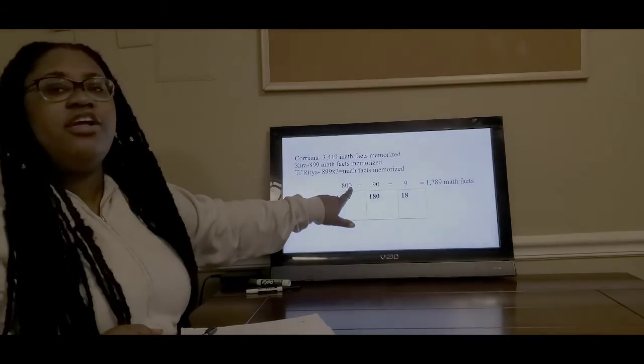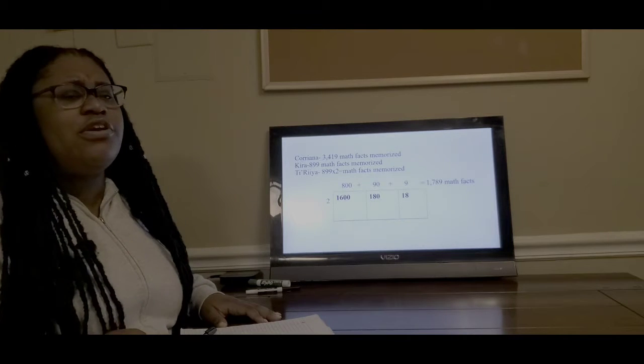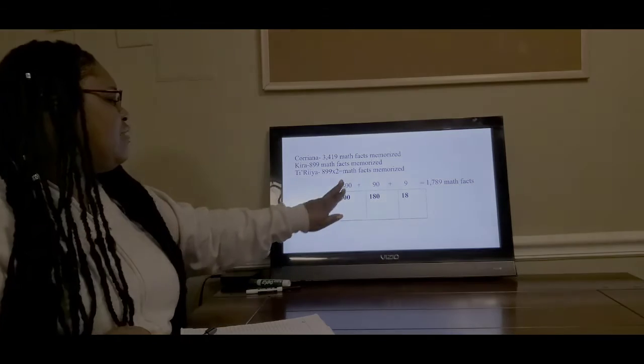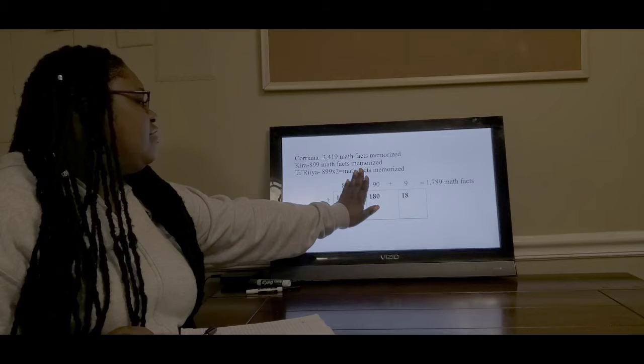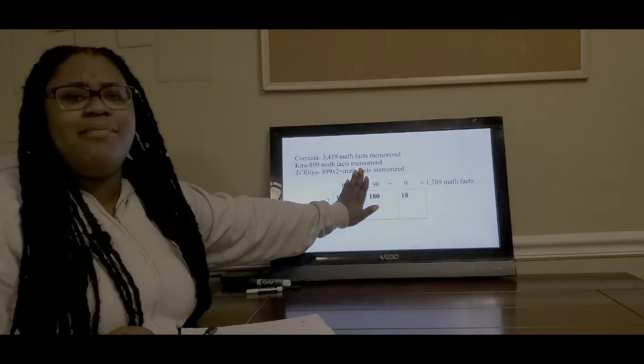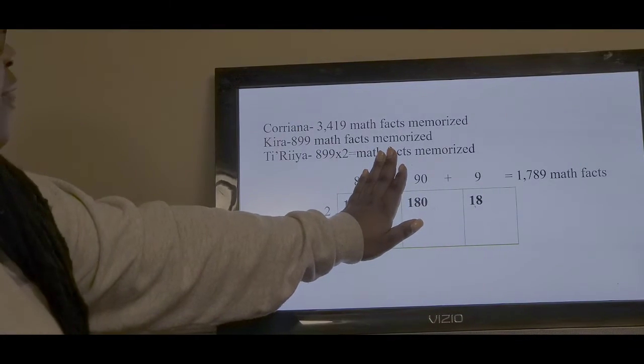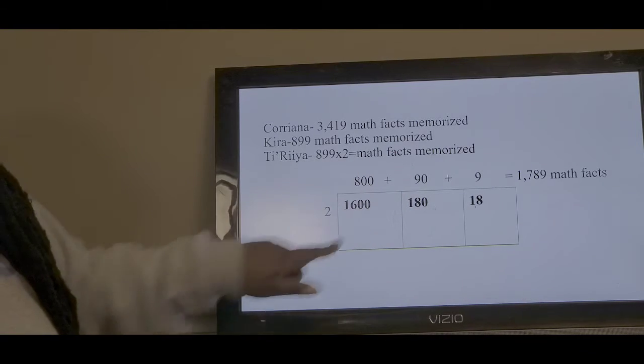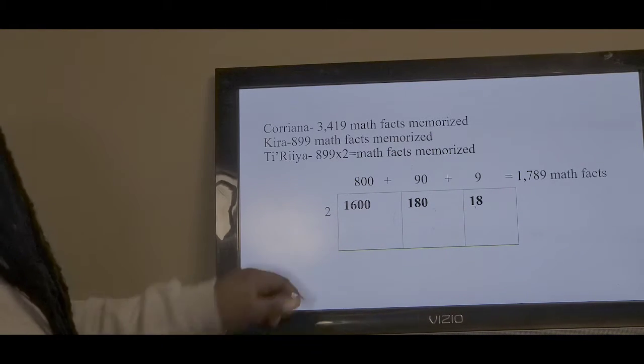I have 2 times 800. If that's a little confusing or a little bit hard for you, you can cover the zeros. 2 times 8 is what? 16, super easy. Then you bring down your zeros, which would give you 1,600.